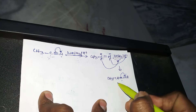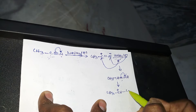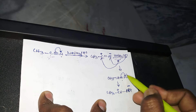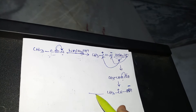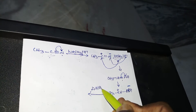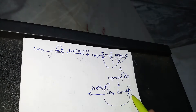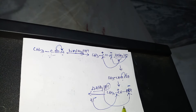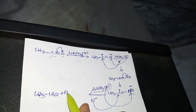This double bond again shifts towards the right-hand side, giving CH3 CH+ then NH minus. So CH is getting a positive charge and N is getting a negative charge. Again reacting with one more LiAlH4, H+ attacks the NH minus group side, and H minus goes to the CH+ side. The final product is CH3CH2NH2.